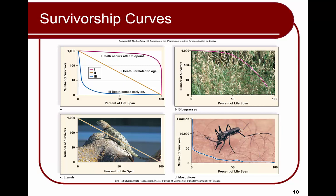In figure B, the bluegrass — the magenta line — shows that they survive a long time, with death starting to occur after the midpoint, after age 50. In figure C, the lizard shows that death can happen at any time; the population just decreases steadily over time. In figure D, the mosquitoes — the blue line — show death happening very early in life, so their chances of surviving a long time are not good.